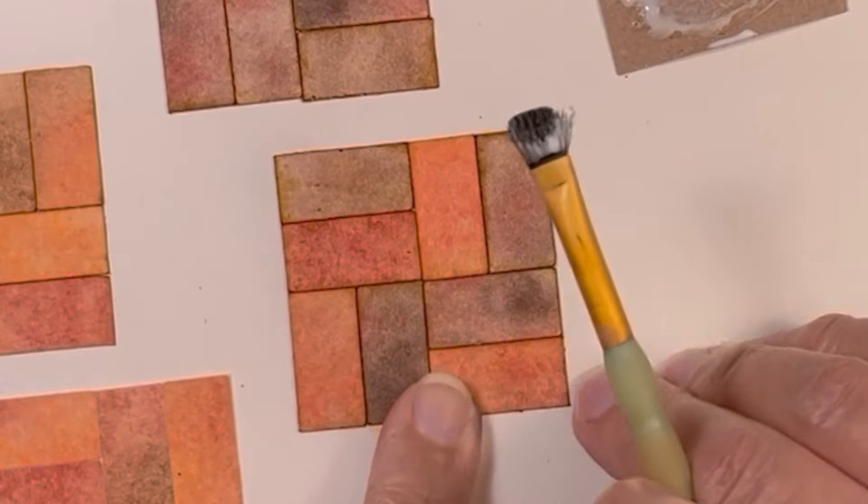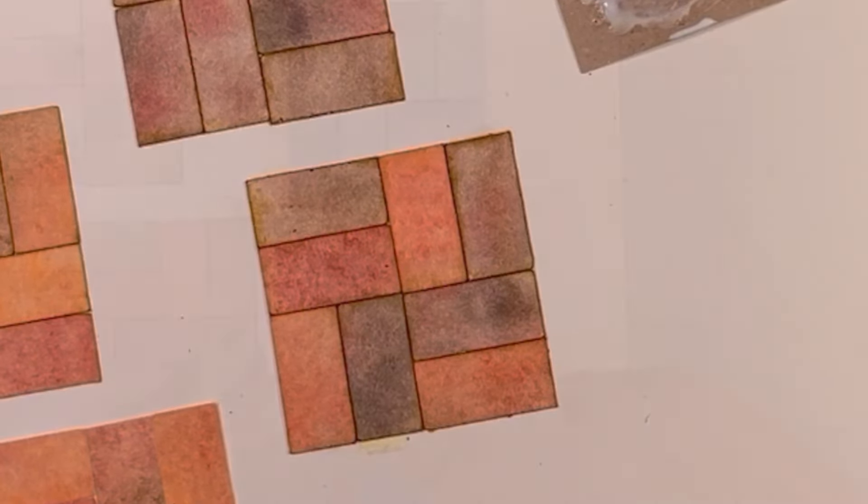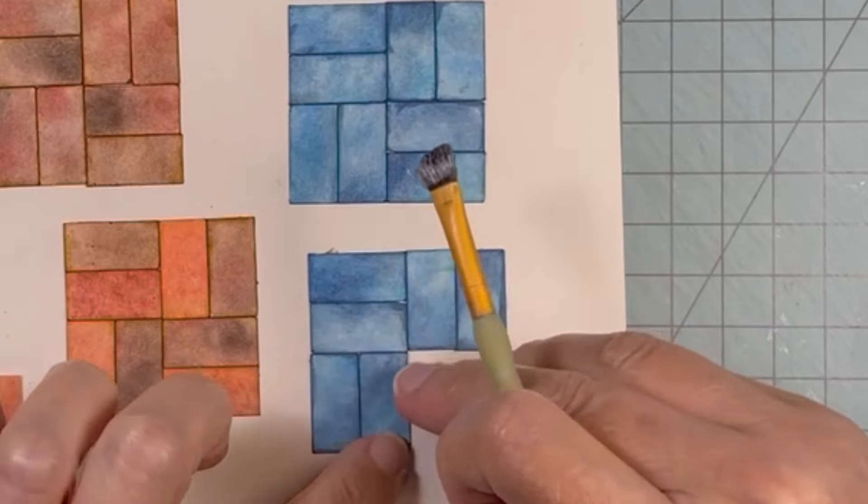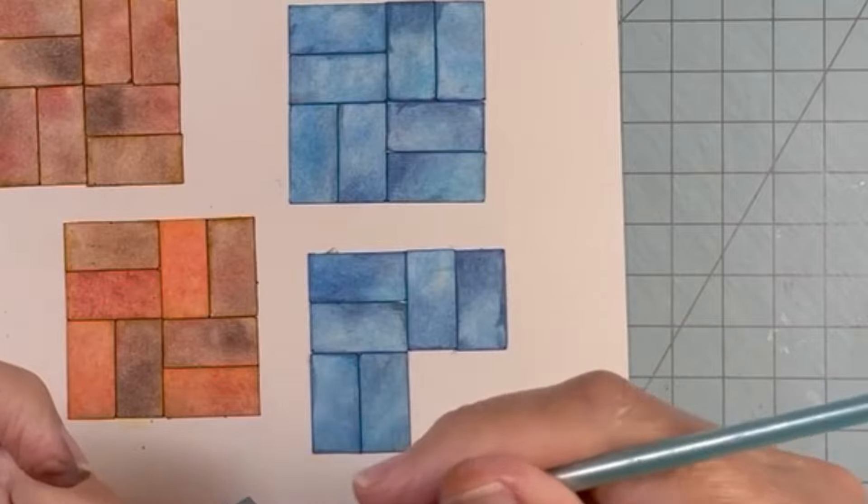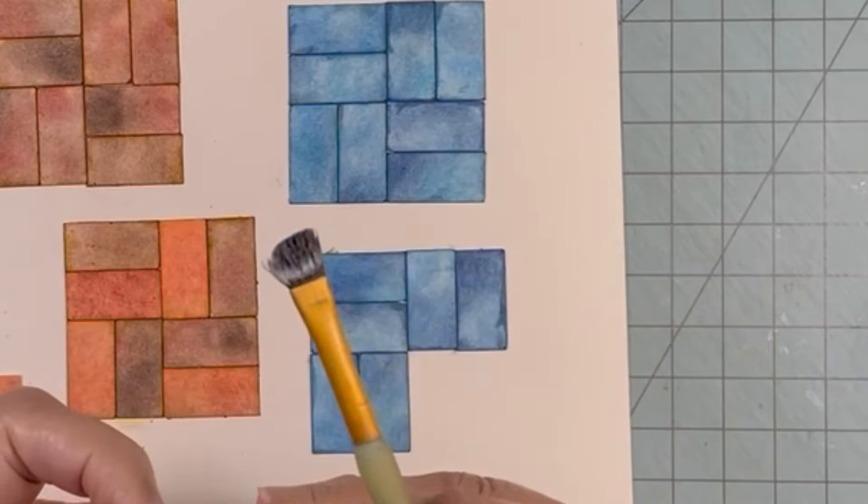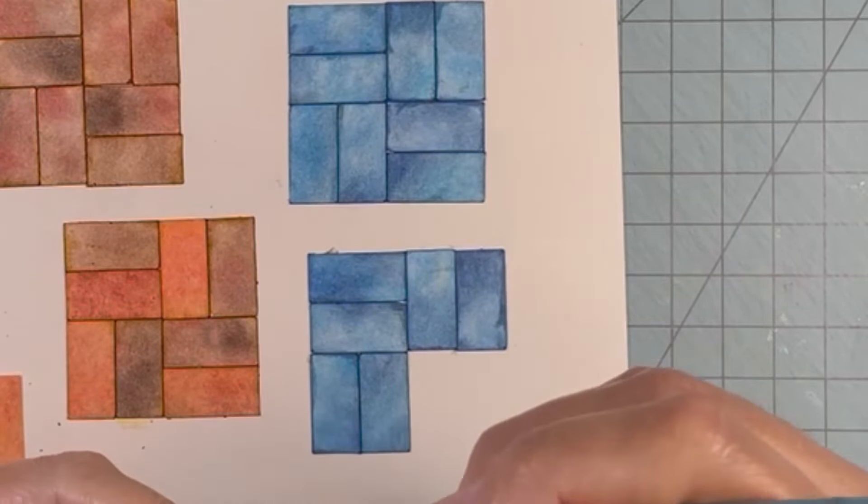I've glued down two sections of the blue tiles, because on one I'm going to leave it dull. And the other one I am going to paint maybe diamond glaze or Mod Podge or something on it to shine it up.